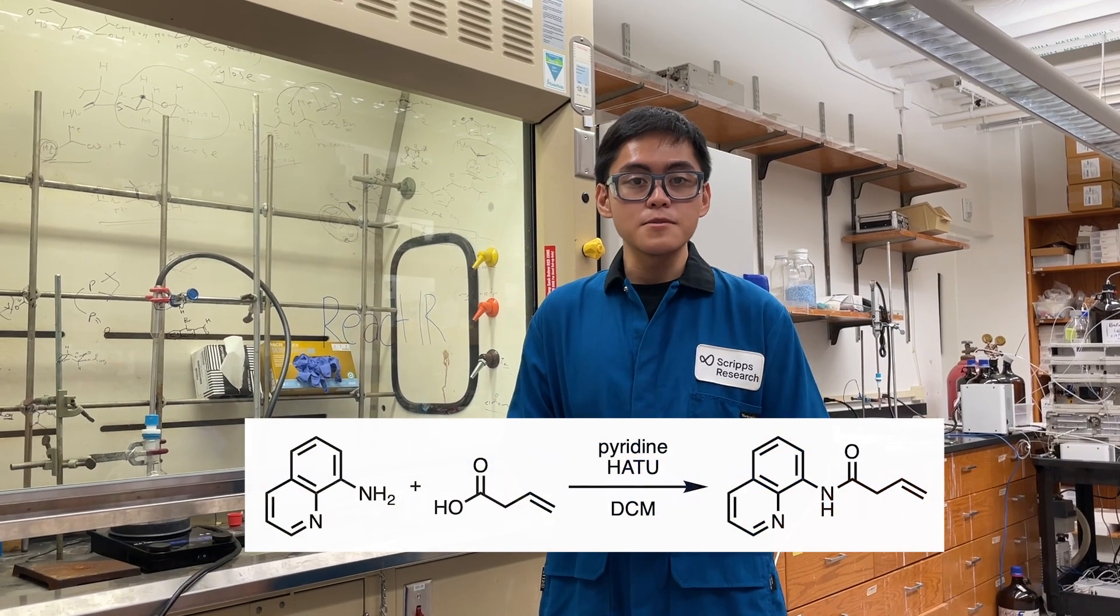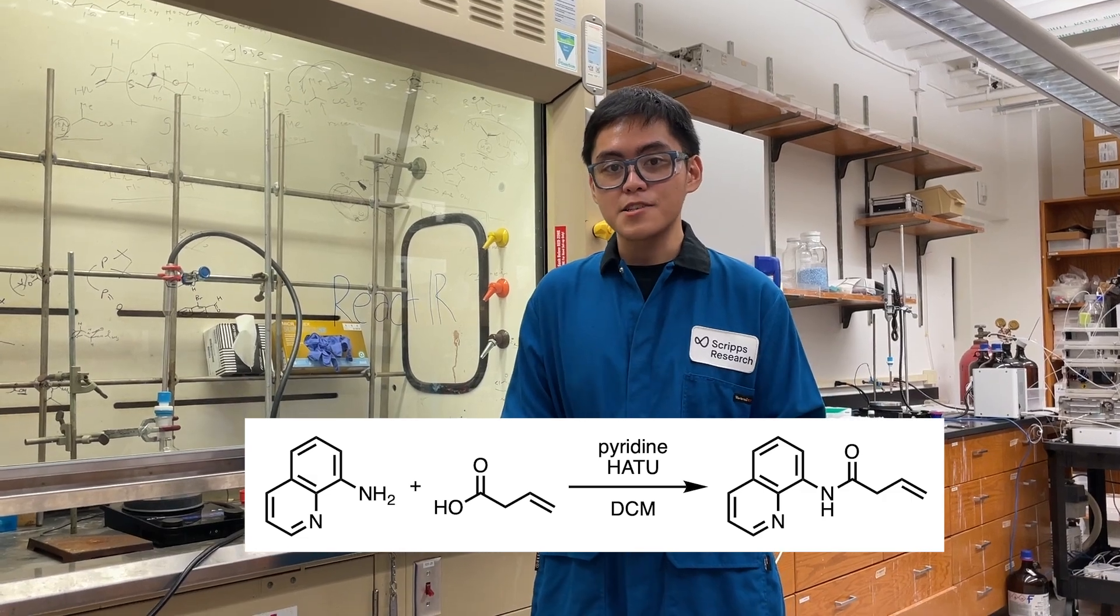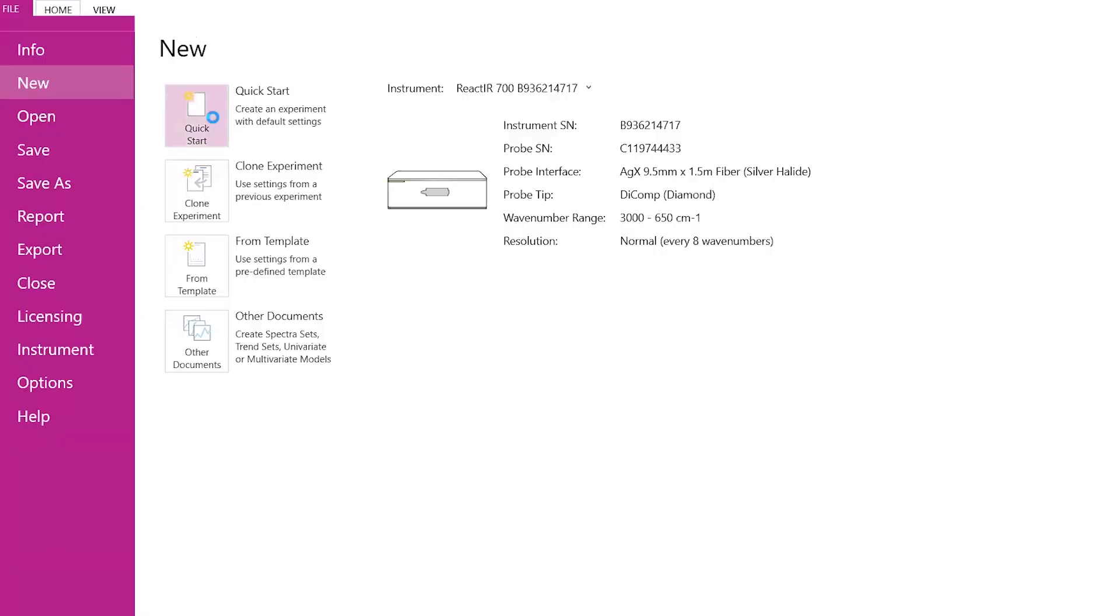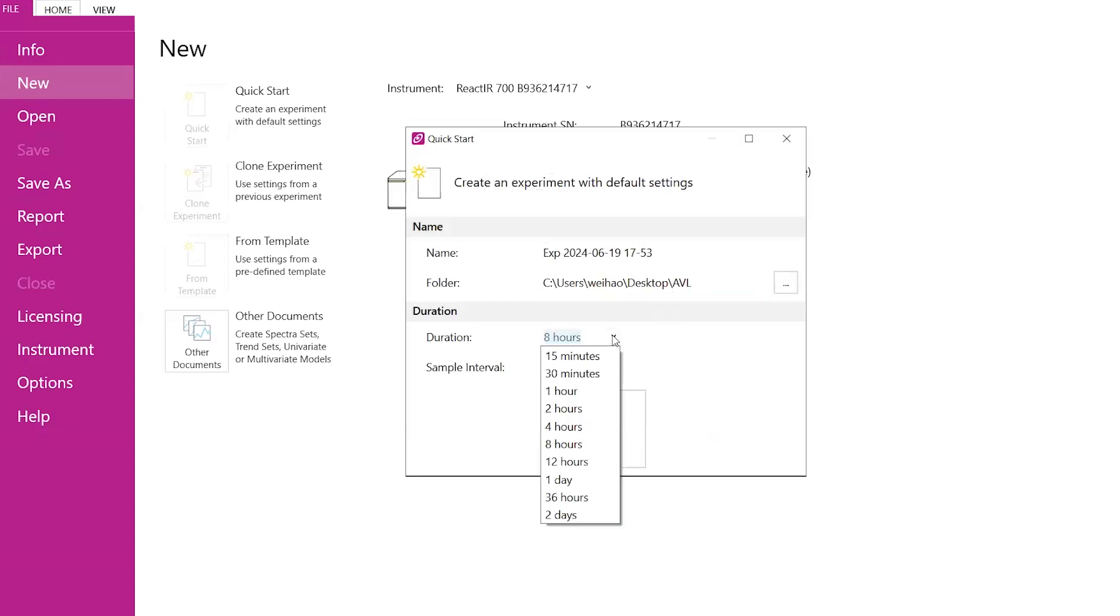Now let's do a demonstration of a simple amidation reaction. First, go to the software iCIR and start a new experiment. We'll just make the duration of this one day, since the reaction runs overnight, and then we'll sample it every five minutes.